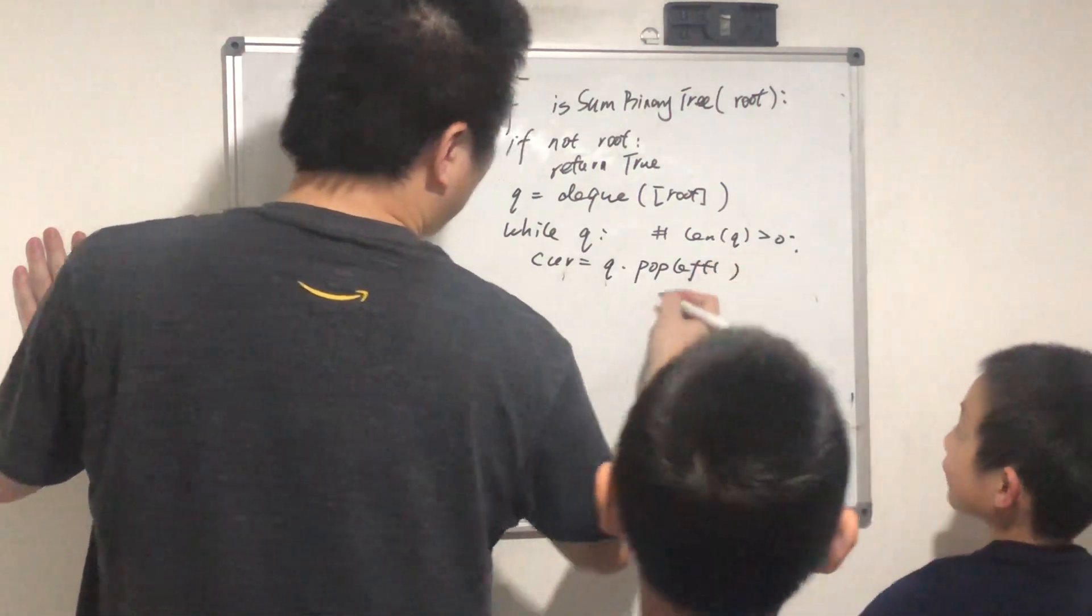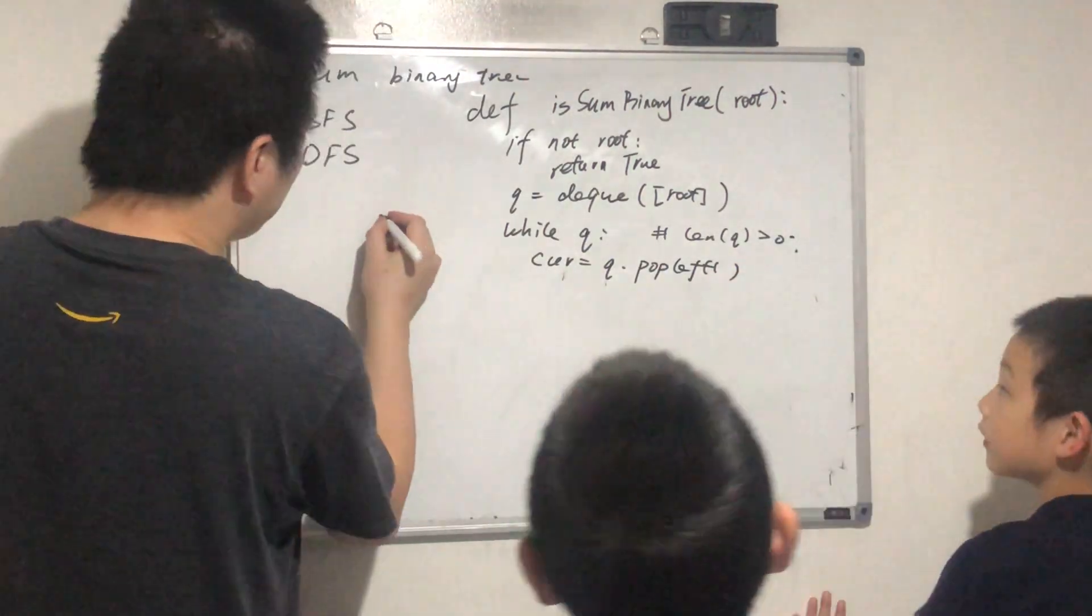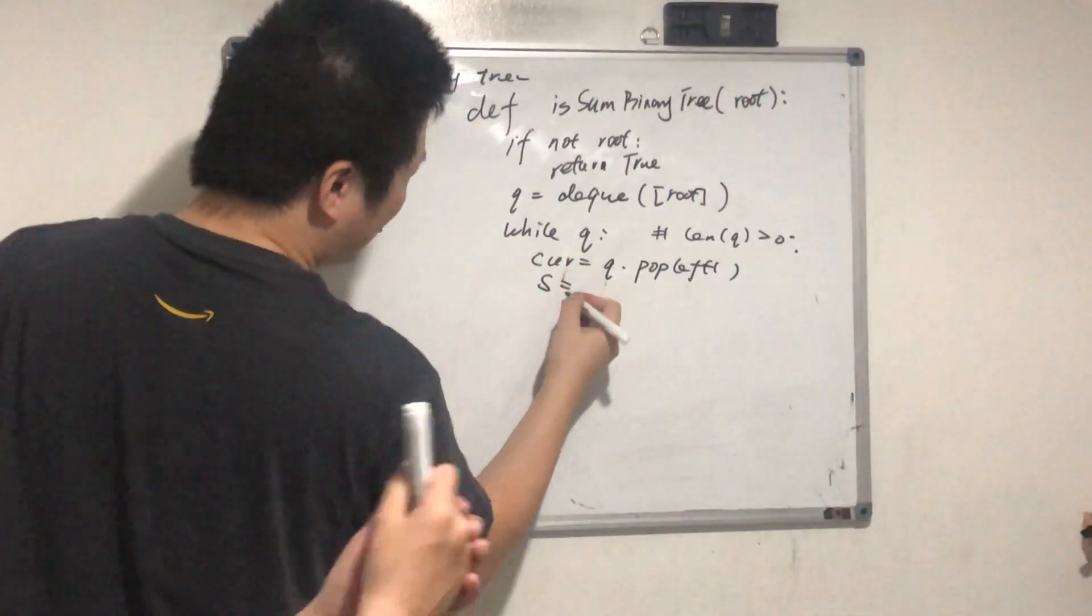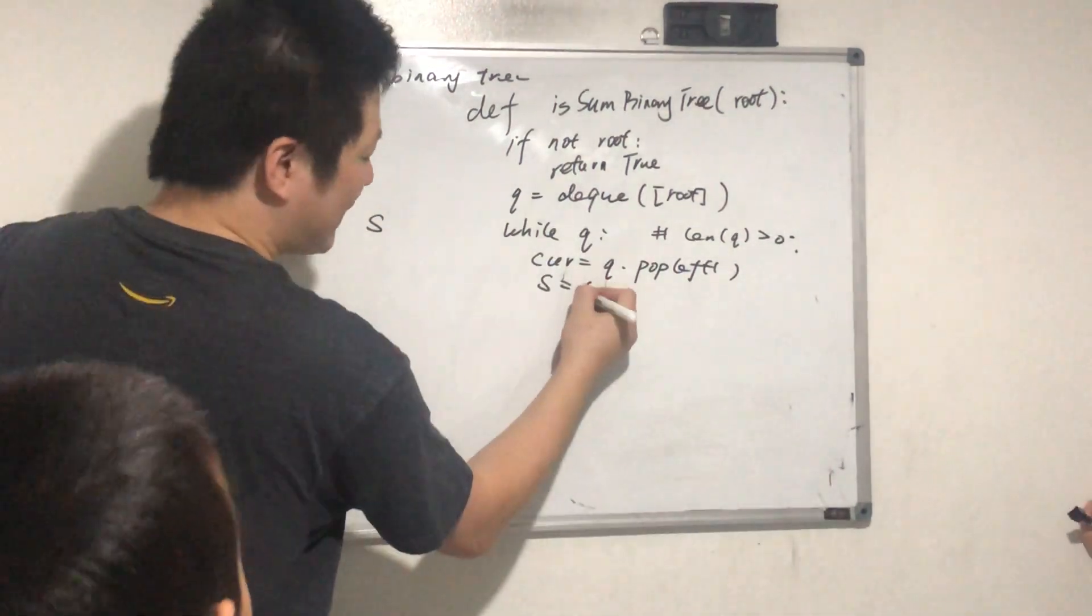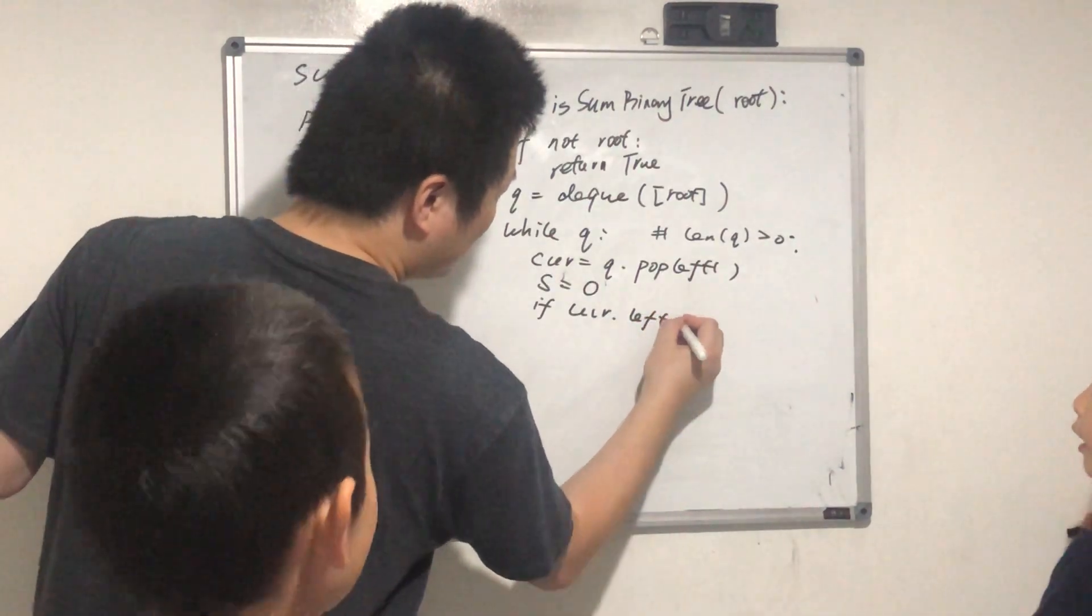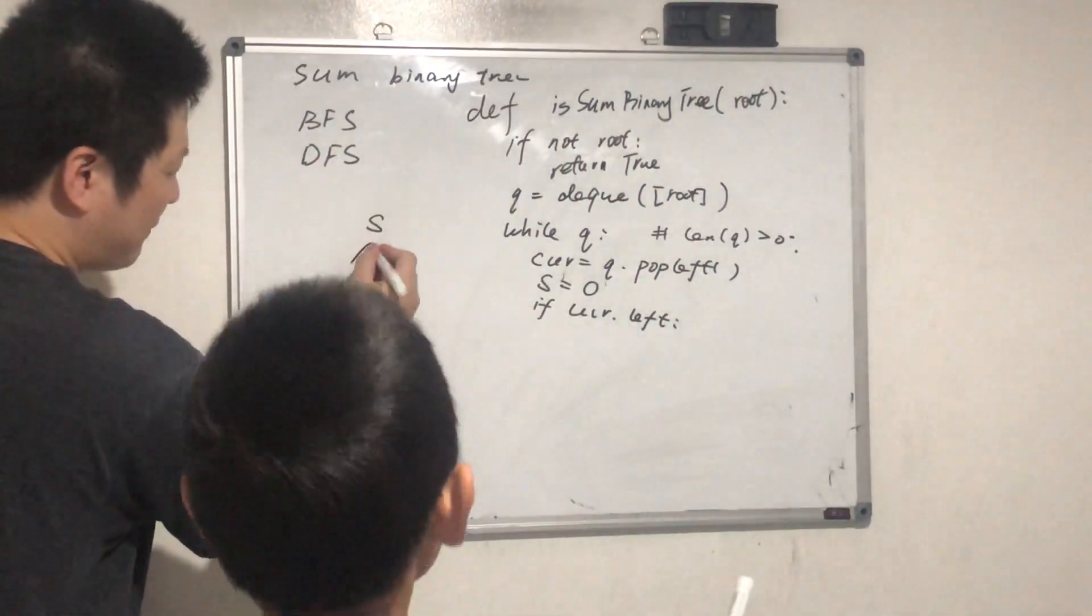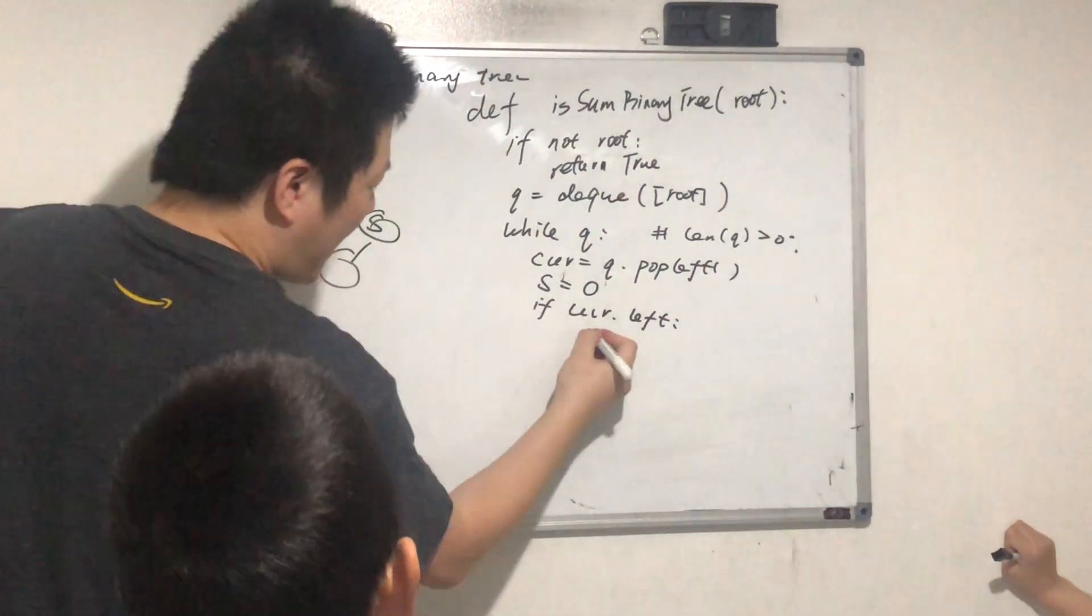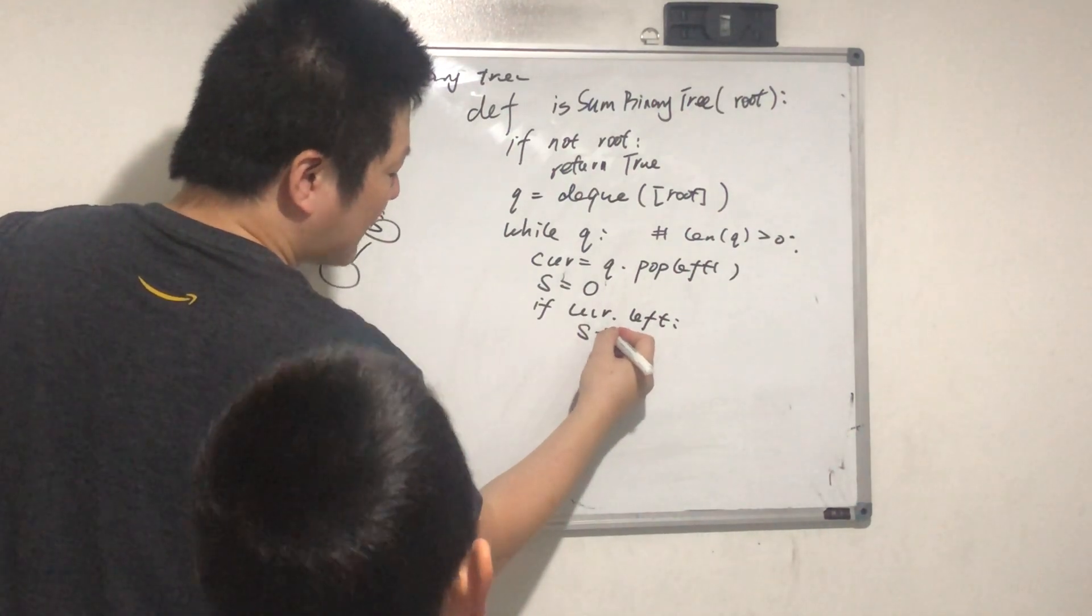Okay, let's assume s is the sum of the kids. s = 0. And if current.left, what should I do with this? If there's a left kid, s += current.left.val.